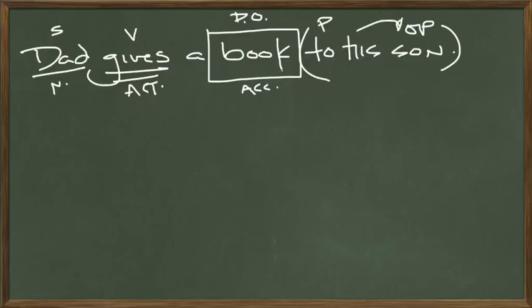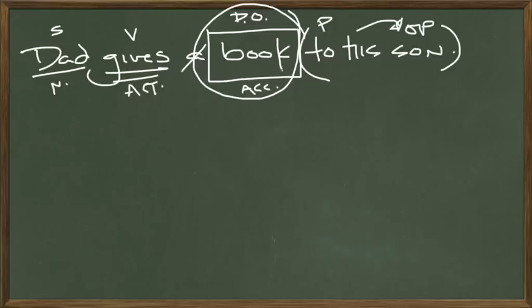Whose son? His son — that's a possessive pronoun and also an adjective because it's describing son. The article adjective goes away in Latin. When talking about the dative case, you have to ask: who gets the direct object? Whoever gets the direct object is the indirect object. That means son is the indirect object, so this whole prepositional phrase is an indirect object phrase. In Latin, this goes into the dative case, because the dative case is the case of the indirect object.